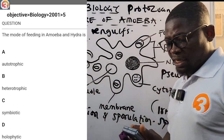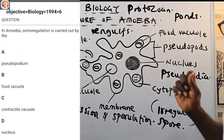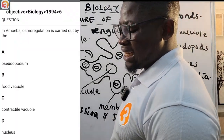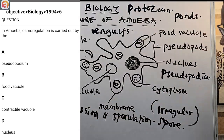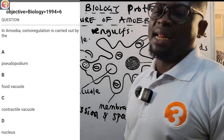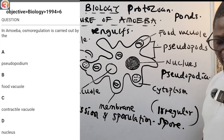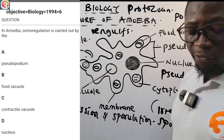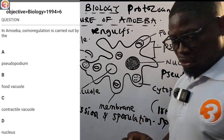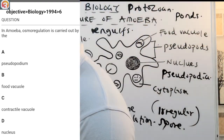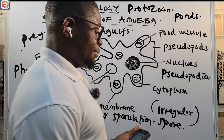1994 question number 6: 'In amoeba, osmoregulation is carried out by the...' The contractile vacuole maintains the internal water balance and expels waste from the body. The options are: A) pseudopodium, B) food vacuole, C) contractile vacuole, D) nucleus. The correct answer is C — the contractile vacuole. That is all we need to know about the structure of the amoeba.